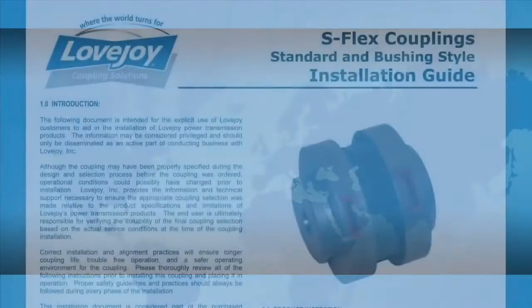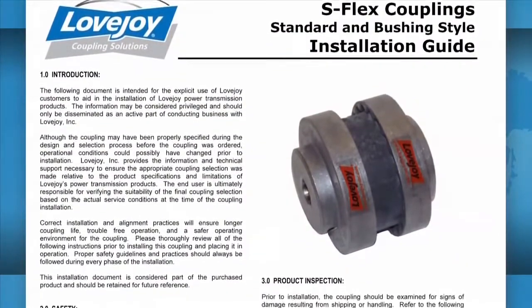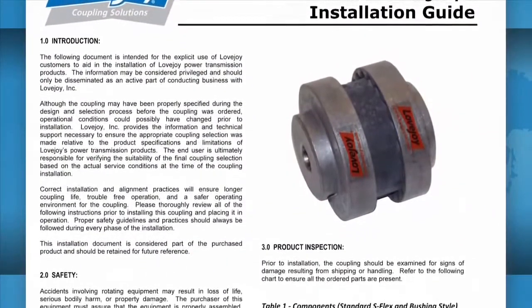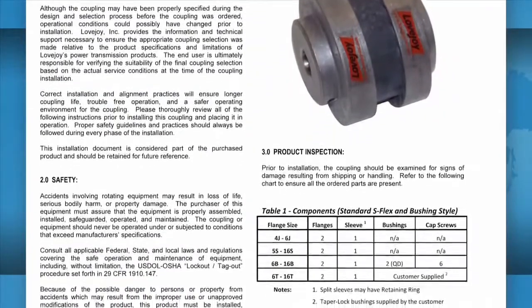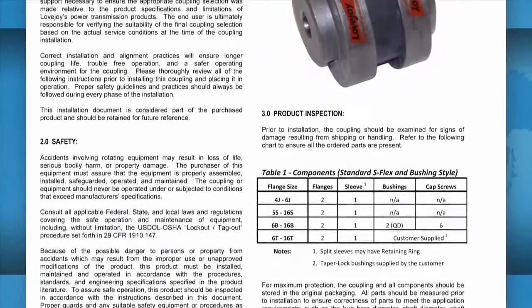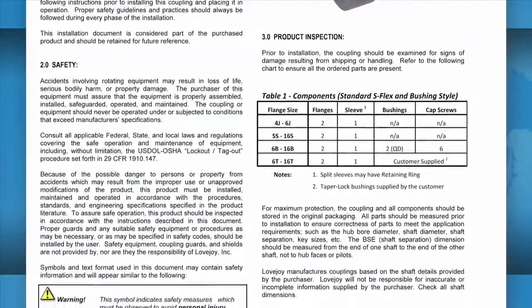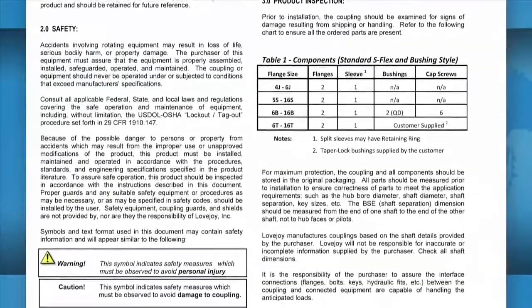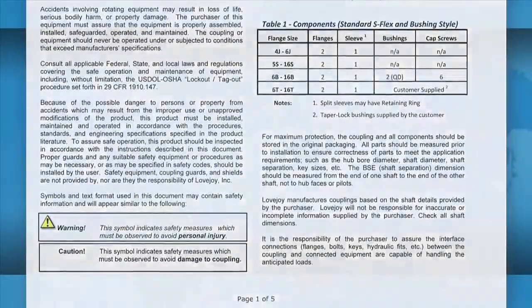It is always recommended to keep a copy of the specific coupling installation guide readily available when installing your Lovejoy coupling. The installation guide contains charts that show the necessary details, including allowable coupling misalignment and torque settings for tightening the set screws and bolts. Some installation guides may contain performance and dimensional information important when confirming the accuracy of the coupling selection.